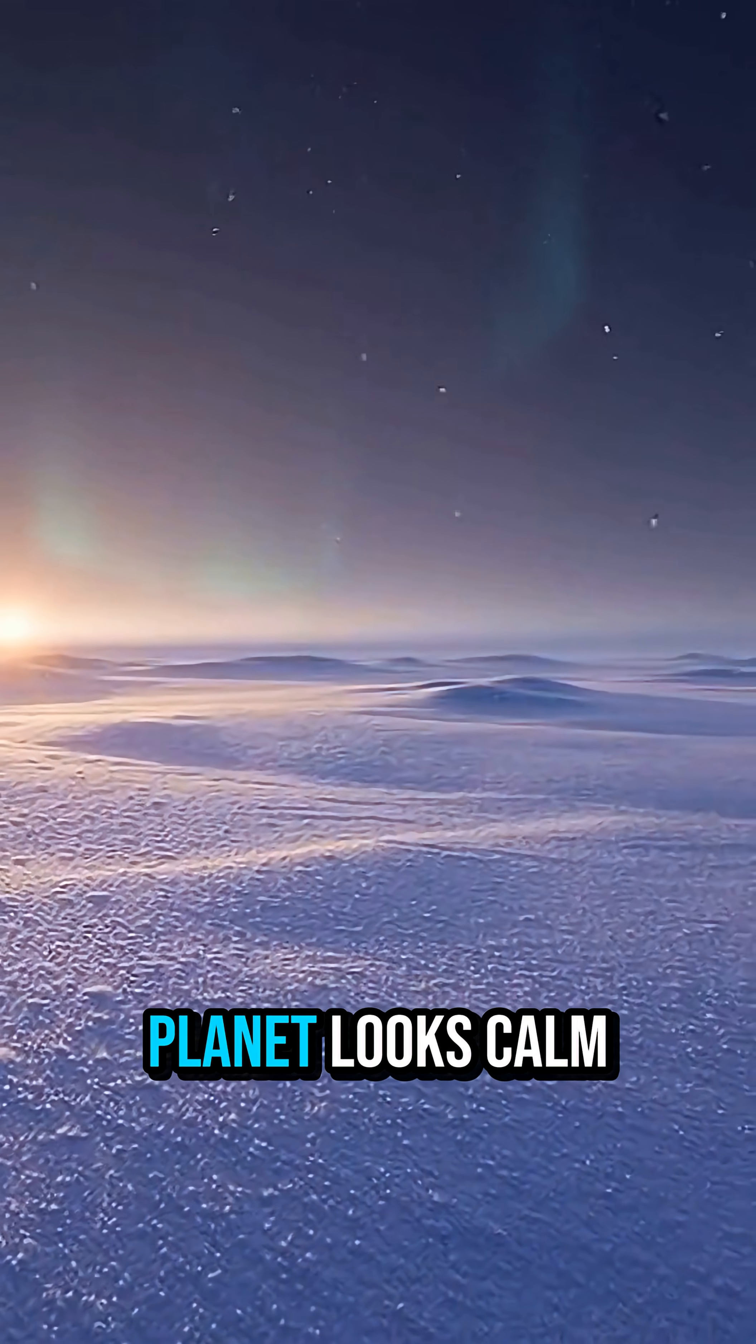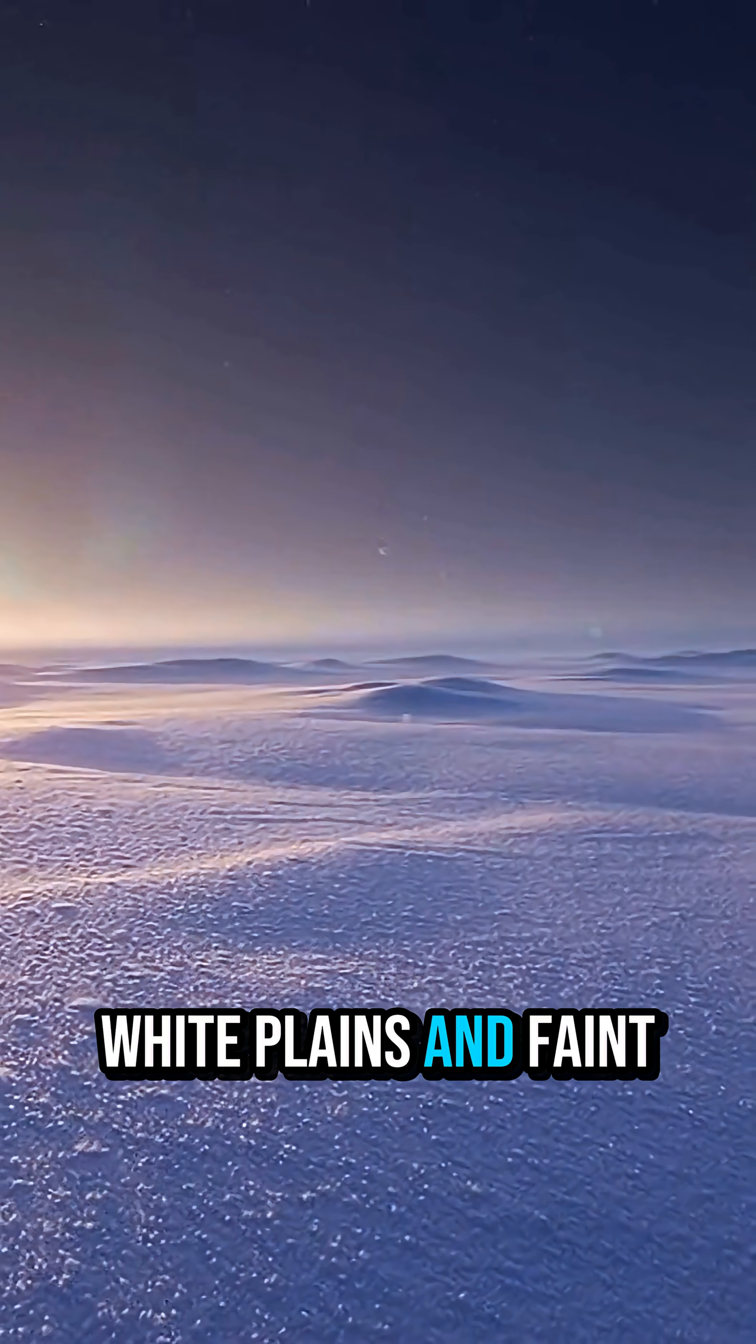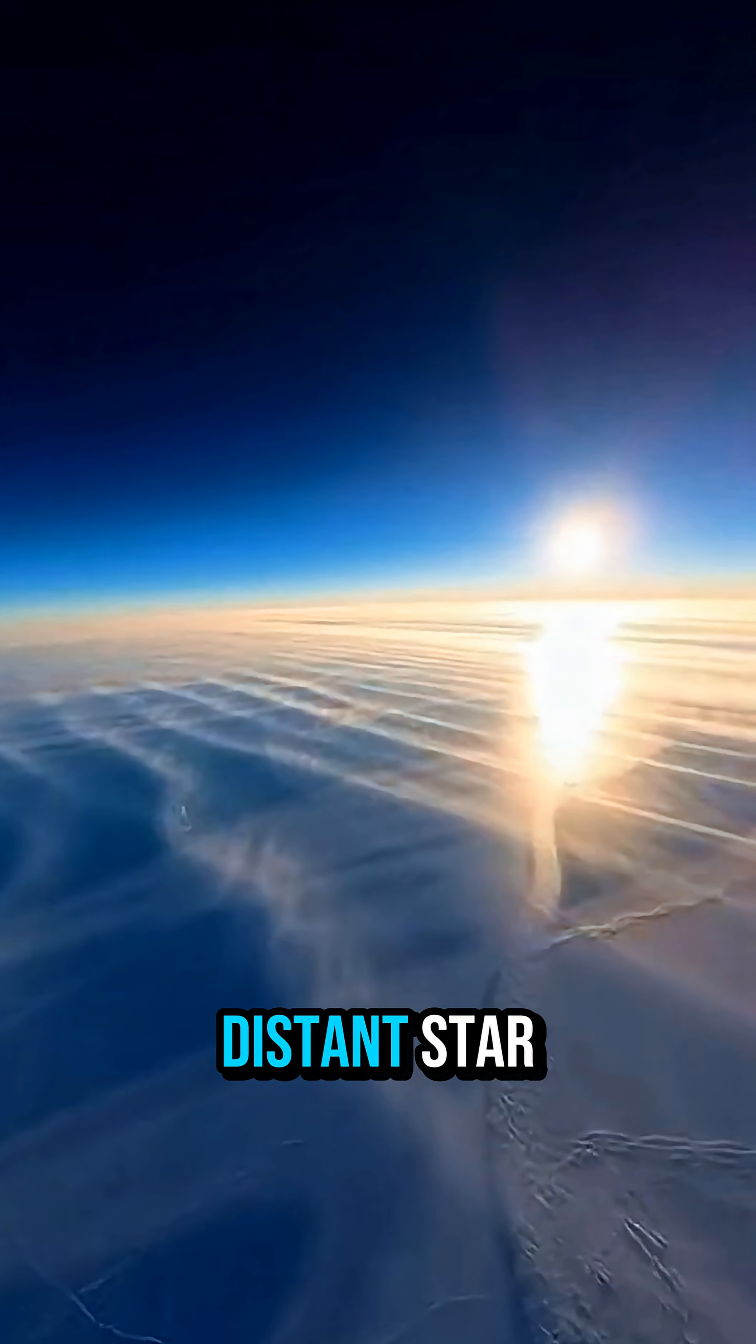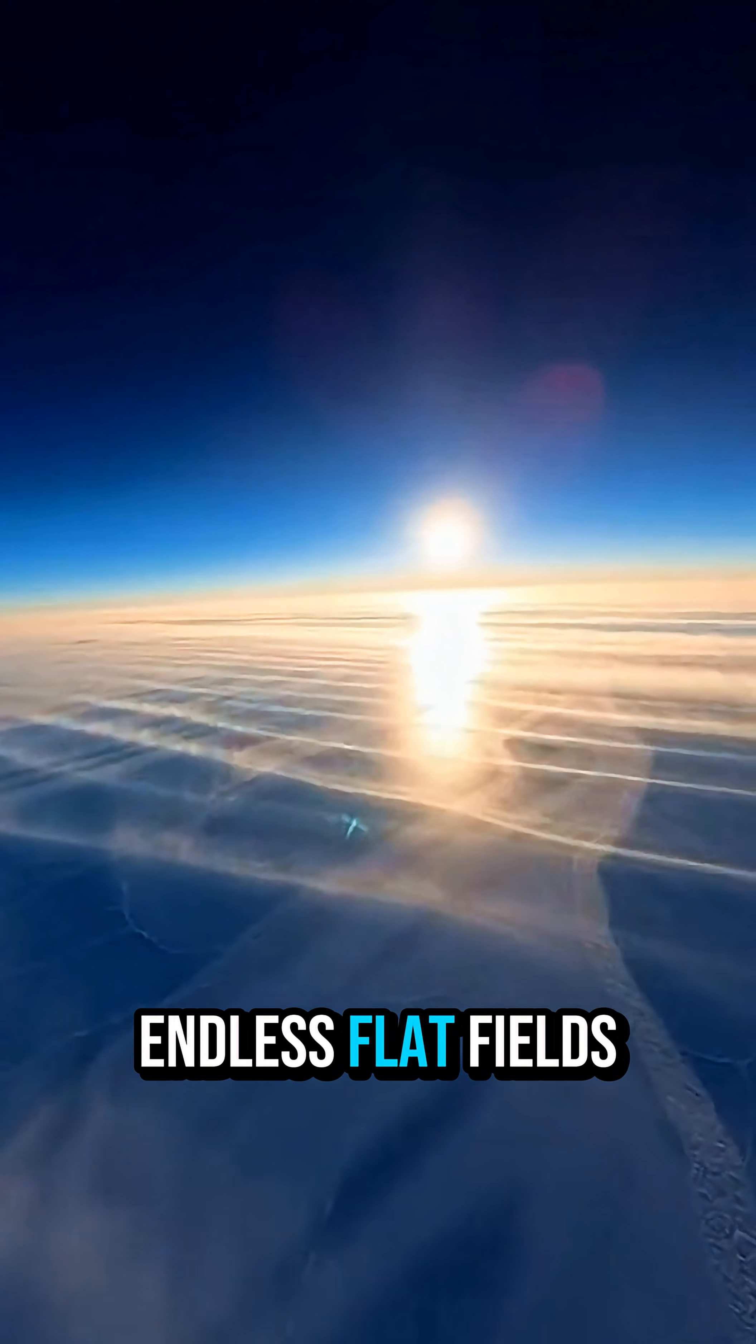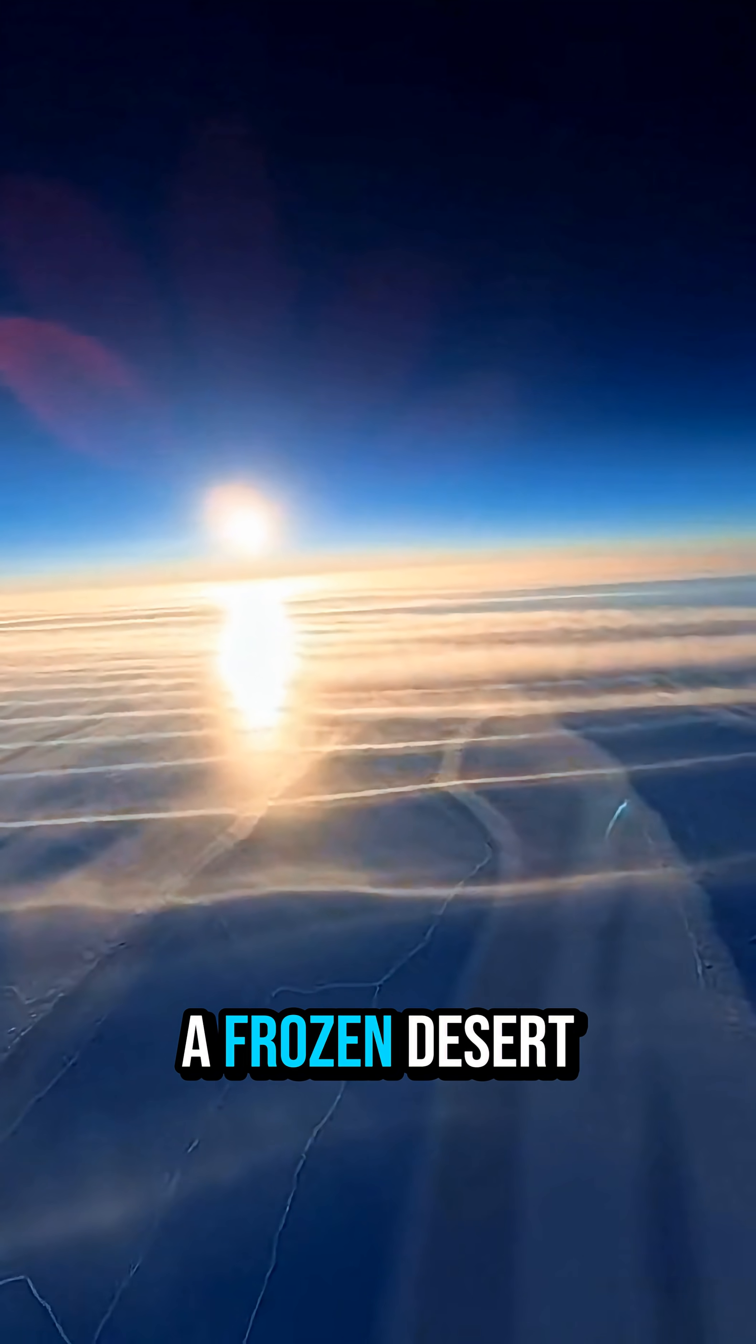From afar, the planet looks calm and pale, wrapped in smooth white plains and faint icy caps, circling a weak, distant star. Drop into orbit and you'd see endless flat fields of bright, toxic ice, cracked and rippled like a frozen desert.